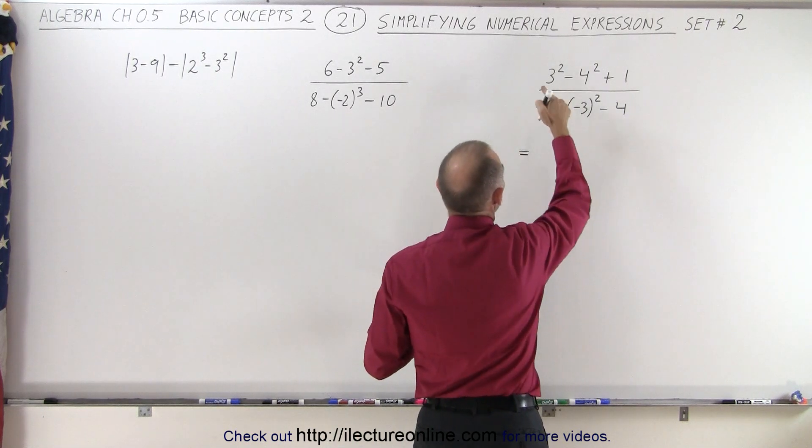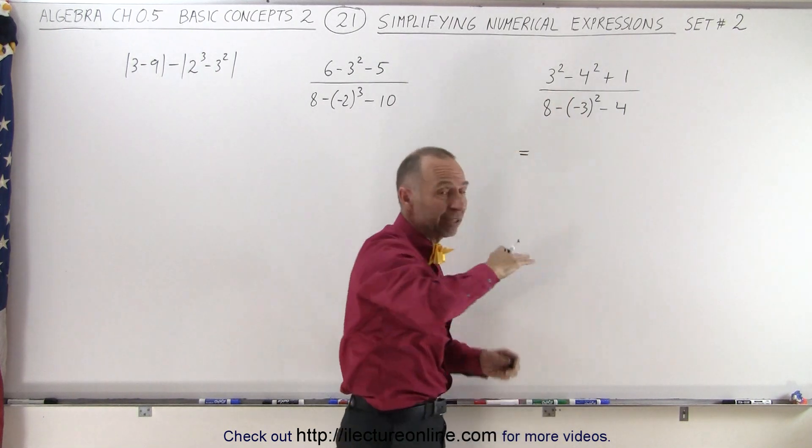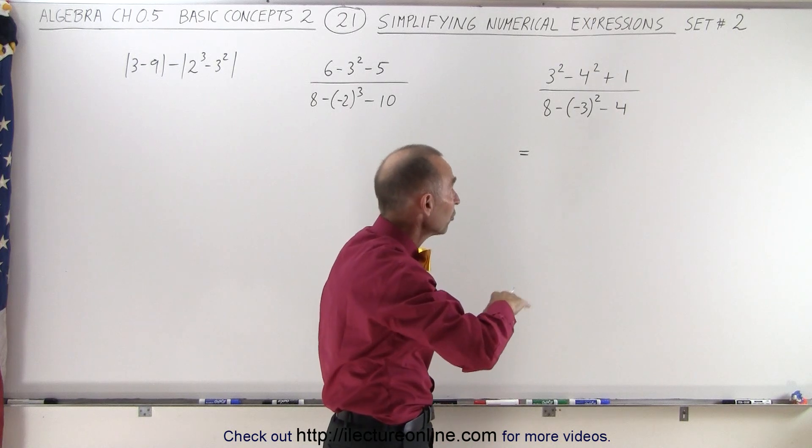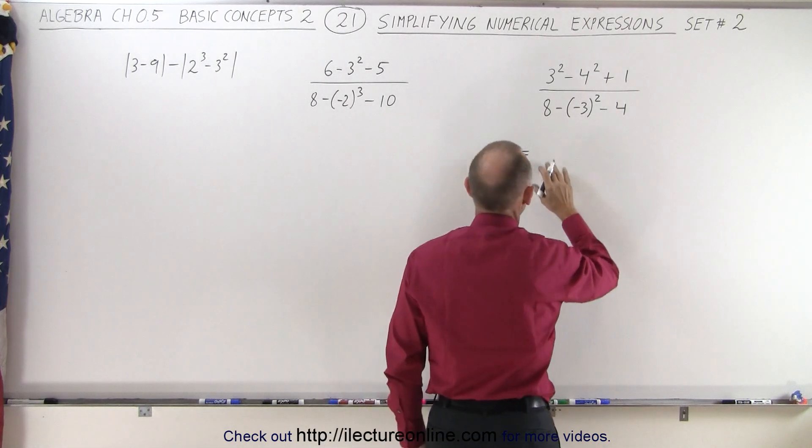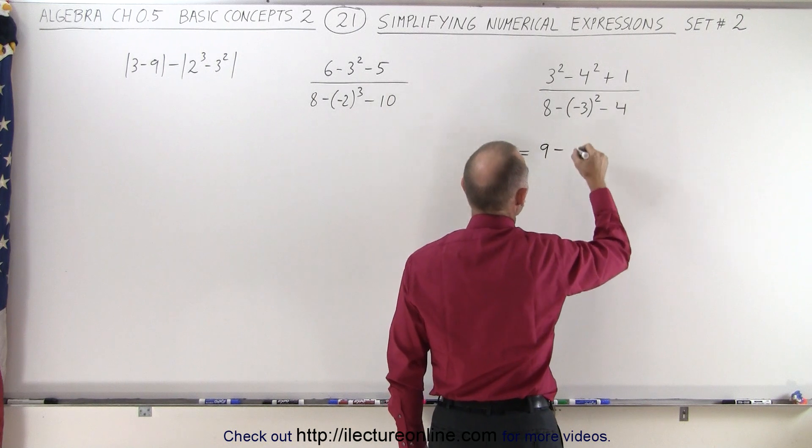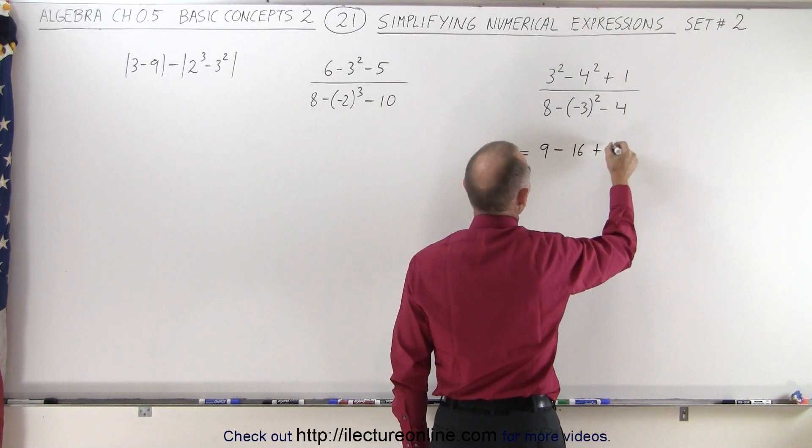So this is equal to 3 squared. Now remember when we have addition and subtraction and exponents, the exponents have to come first. So 3 squared, which is 9, minus 4 squared, which is 16, plus 1.